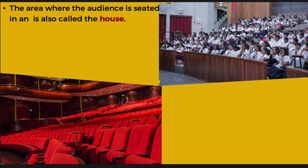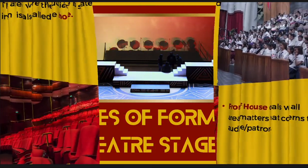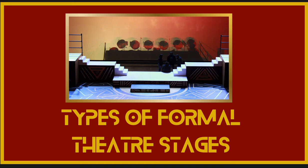Moving along, we're talking about the area where the audience is seated, which is also called the house. Front of house deals with everything that concerns the audience and the patrons. Sometimes you also call the backstage areas back of house. But when we're talking about front of house, we're talking about the people who are coming to patronize a show, not the people who are going to be on stage or backstage. So let's head right into the meat of the matter — the types of formal theater stages.